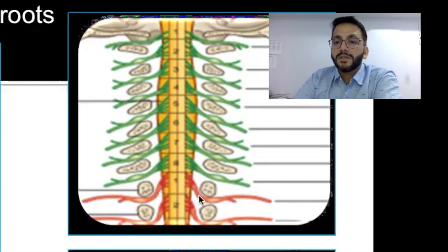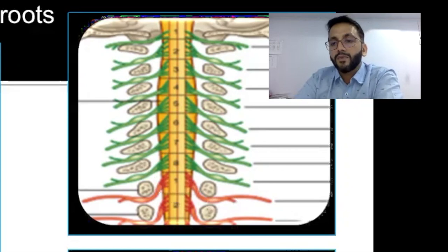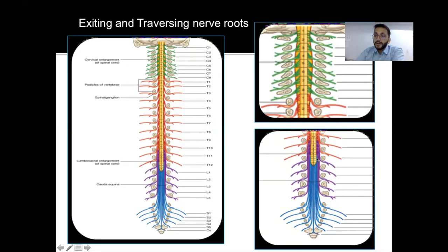This is the traversing part of the nerve, and this is the exiting part. We have both traversing and exiting nerves in the dorsal and lumbar spine, but this is not the case in the cervical spine. When we look at disc herniations, a paracentral disc causes compression of the traversing nerve, while a far lateral disc causes compression of the exiting nerve in the neural foramen.